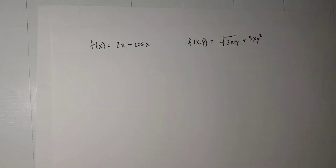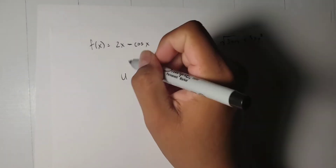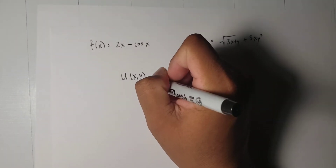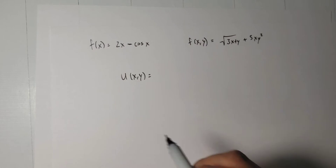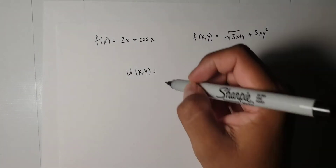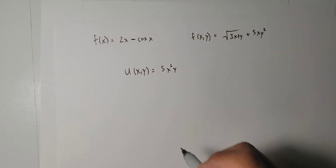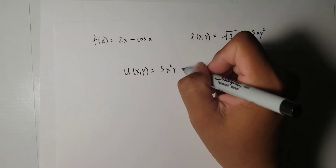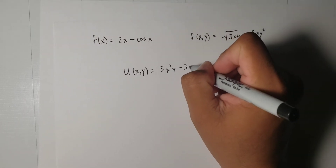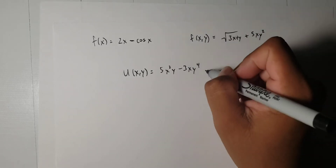This book uses the letter u for its functions. So for example, u of xy — u is just the name of the function. Let's say u of xy is equal to 5x squared y minus 3xy to the fourth plus sine x.